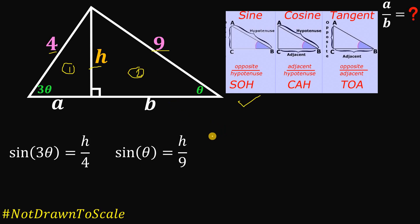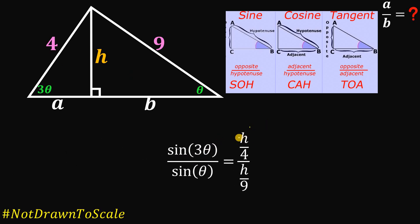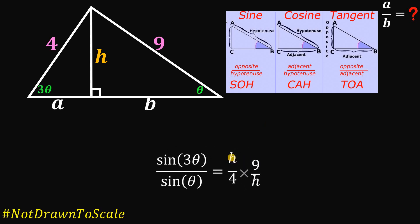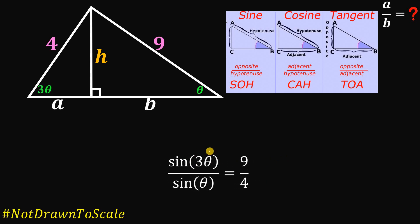Next, we take the ratio of sine 3 theta over sine theta. On the right-hand side, we multiply H over 4 by the reciprocal of H over 9, giving us H over 4 times 9 over H. The H's cancel out, leaving us with 9 over 4.